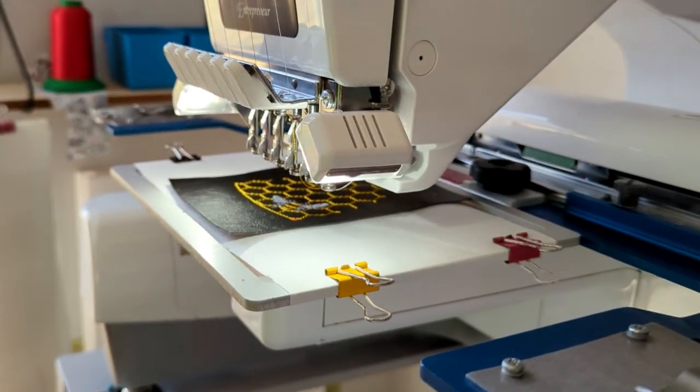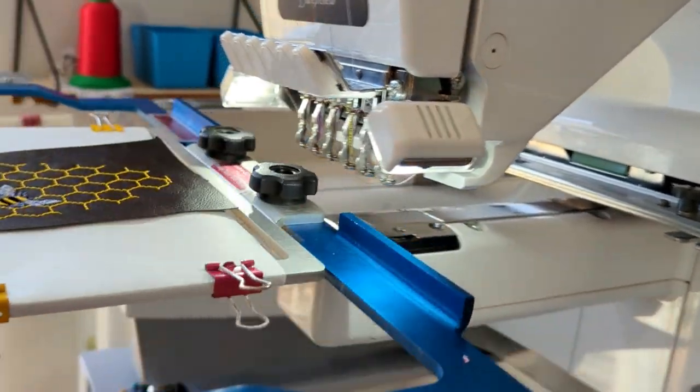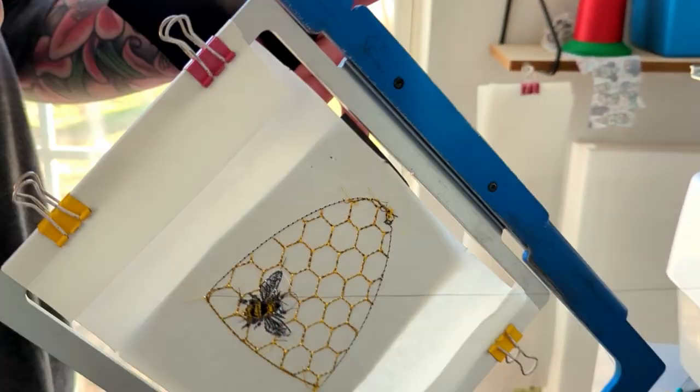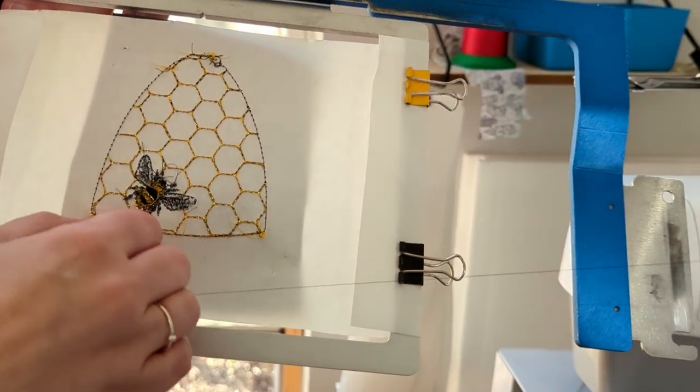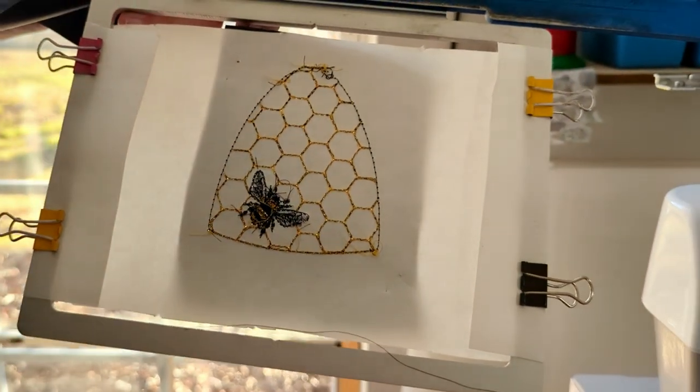Okay, the final step is something we're very familiar with in our In The Hoop projects. You're going to remove your hoop and take a look at the back. Oh, we got a little hanger on right there. Hold, please.